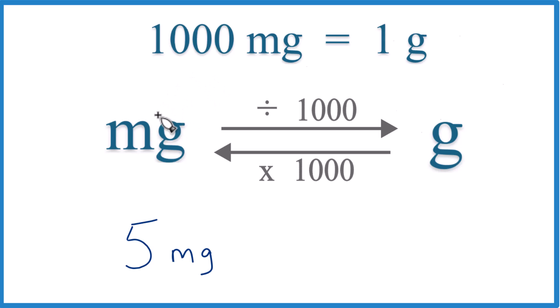We need that when we're converting here from milligrams to grams or grams to milligrams. Since we're starting off with 5 milligrams, we want to get that to grams. Milligrams to grams, we're going to divide by 1,000.